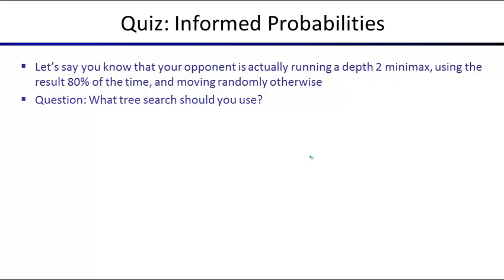Here's a quiz. You're playing a game as the maximizer. Your opponent is running depth-2 minimax — you know that. But 80% of the time they use that result, and 20% of the time they make a random move because they feel too predictable. How do you put this into a game tree that you can solve for your optimal moves? Take a minute to chat with your neighbors.